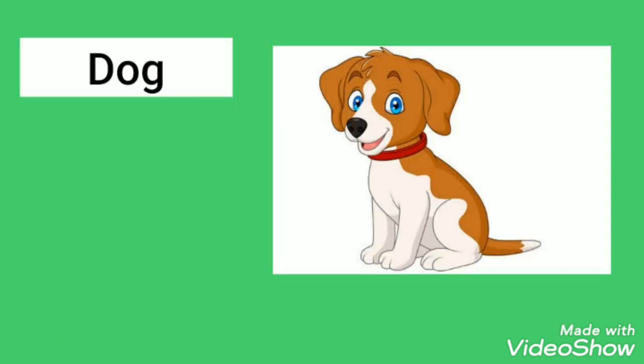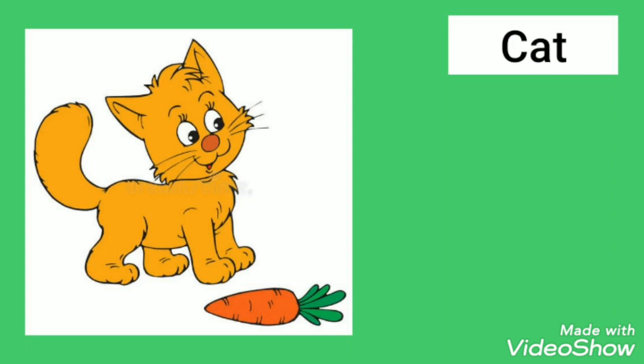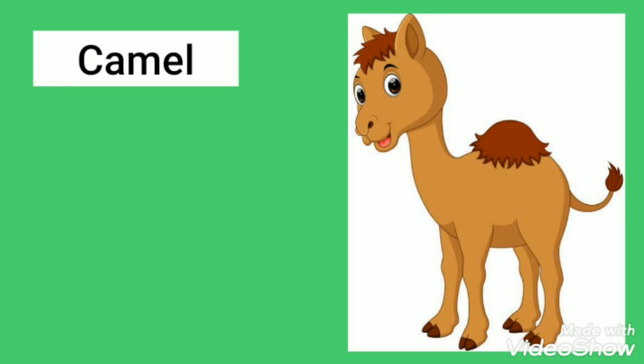A dog guards the house and the farm. A cat kills all the rats around the house or the farm. A camel is known as the ship of the desert as it helps us by carrying our belongings and transportation to different places.